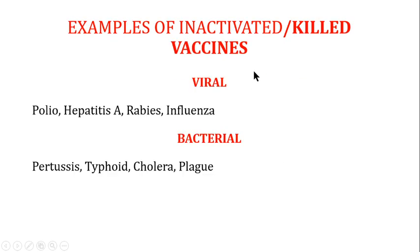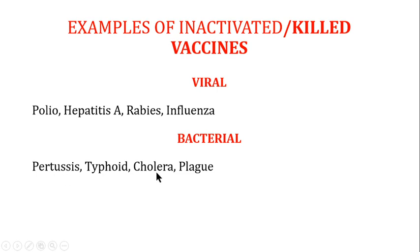Examples of killed vaccines include viral killed vaccines such as vaccines for polio, hepatitis E, rabies, and influenza. Examples of bacterial killed vaccines include pertussis, typhoid, cholera, and plague vaccines, all in the category of bacterial killed vaccines.